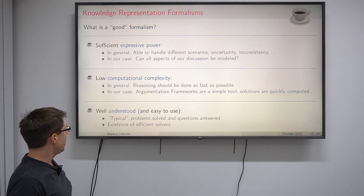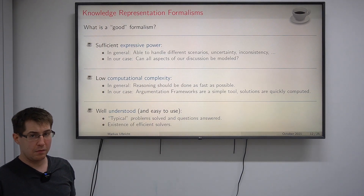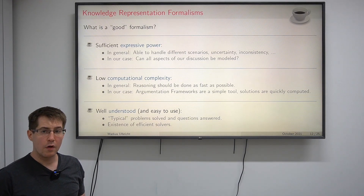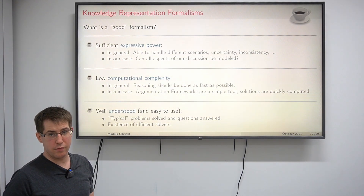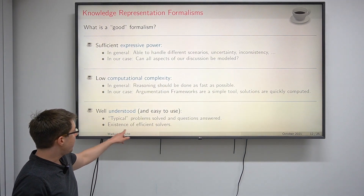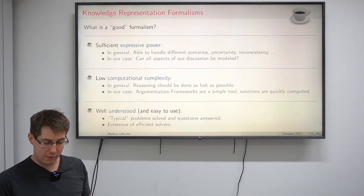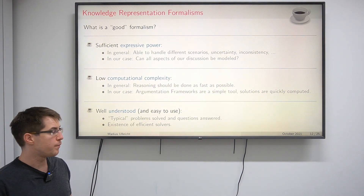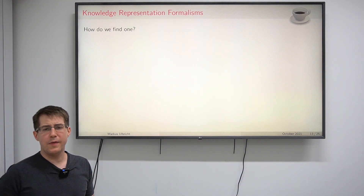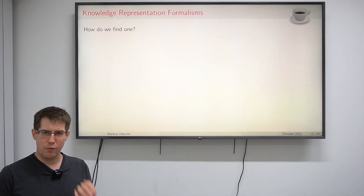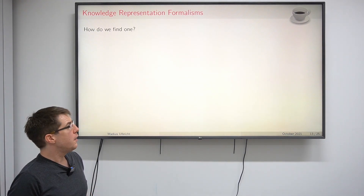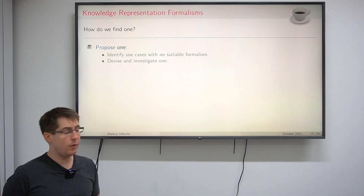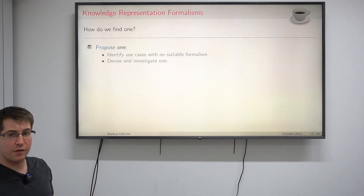Finally, we want our knowledge representation formalism to be well understood and easy to use, meaning typical research problems have been solved and questions answered. For argumentation frameworks this is the case — there is an abundance of research about them, and there are many efficient competing solvers. But what if we have a certain problem and cannot find an appropriate formalism? Then we have to propose a new one. Once we identify a use case with no suitable formalism, we devise and investigate a formalism tailored for our needs.